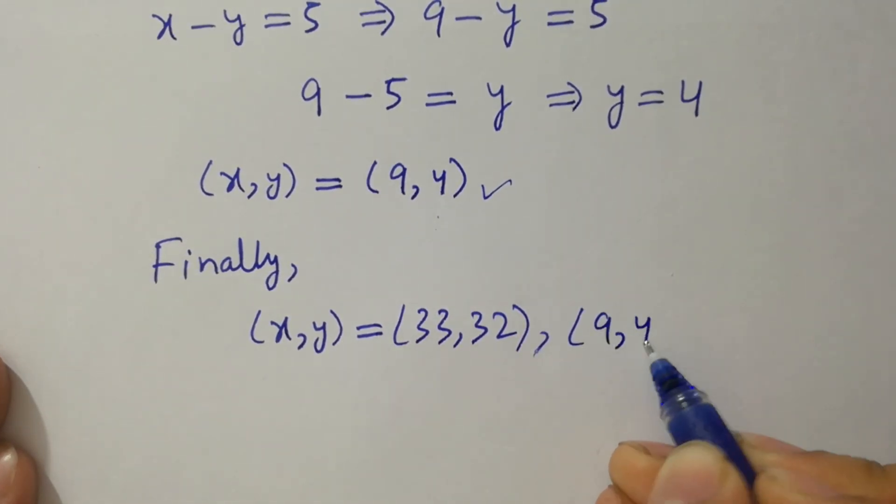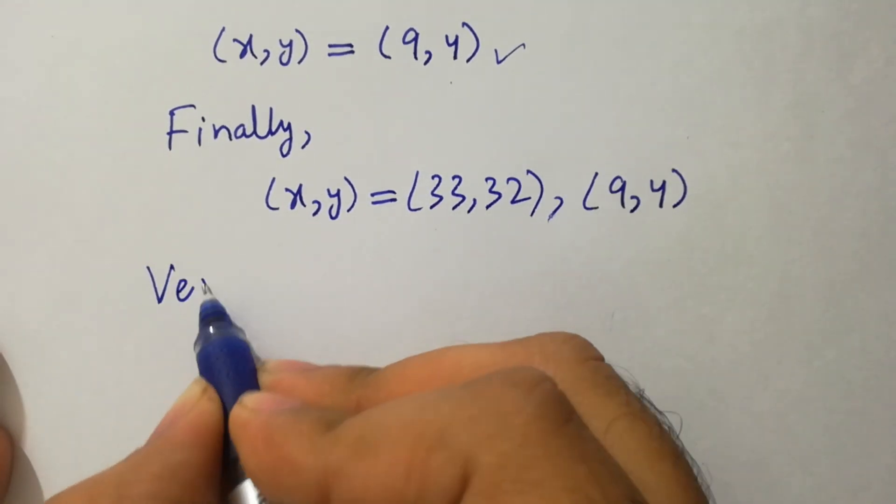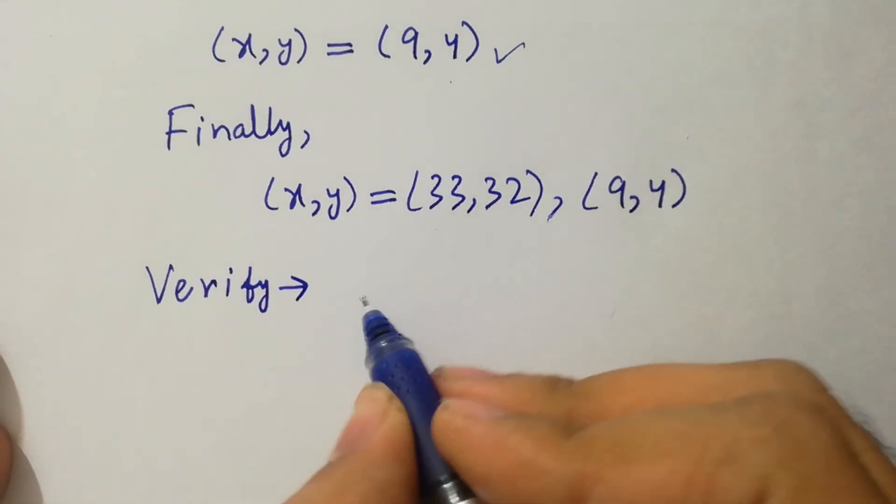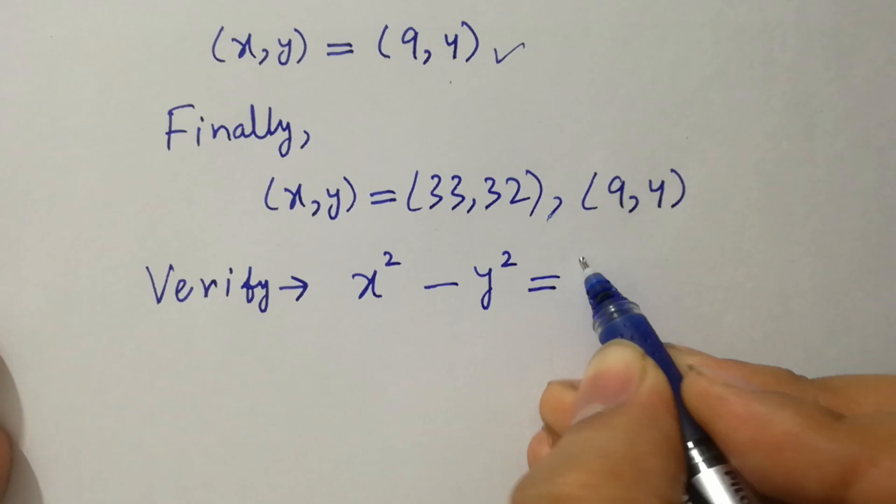So in the next step, I am going to verify x squared minus y squared equal to 65.